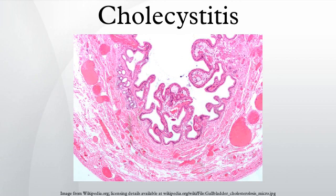Cholecystitis may present as a single episode or may recur on multiple occasions. It usually presents as pain in the right upper quadrant or epigastric region. The gallbladder may be tender and distended. It differs from biliary colic by the presence of an inflammatory component. Pain is initially intermittent, but later usually presents as constant and severe. The pain may be referred to the right scapula rather than the right upper quadrant or epigastric region.